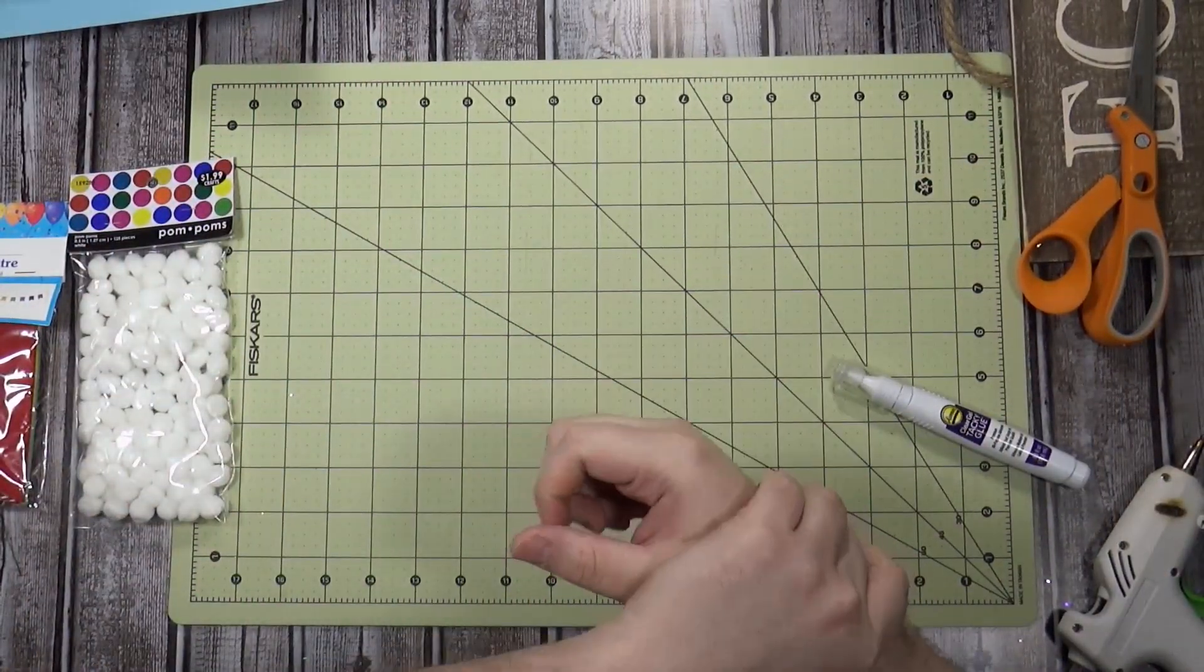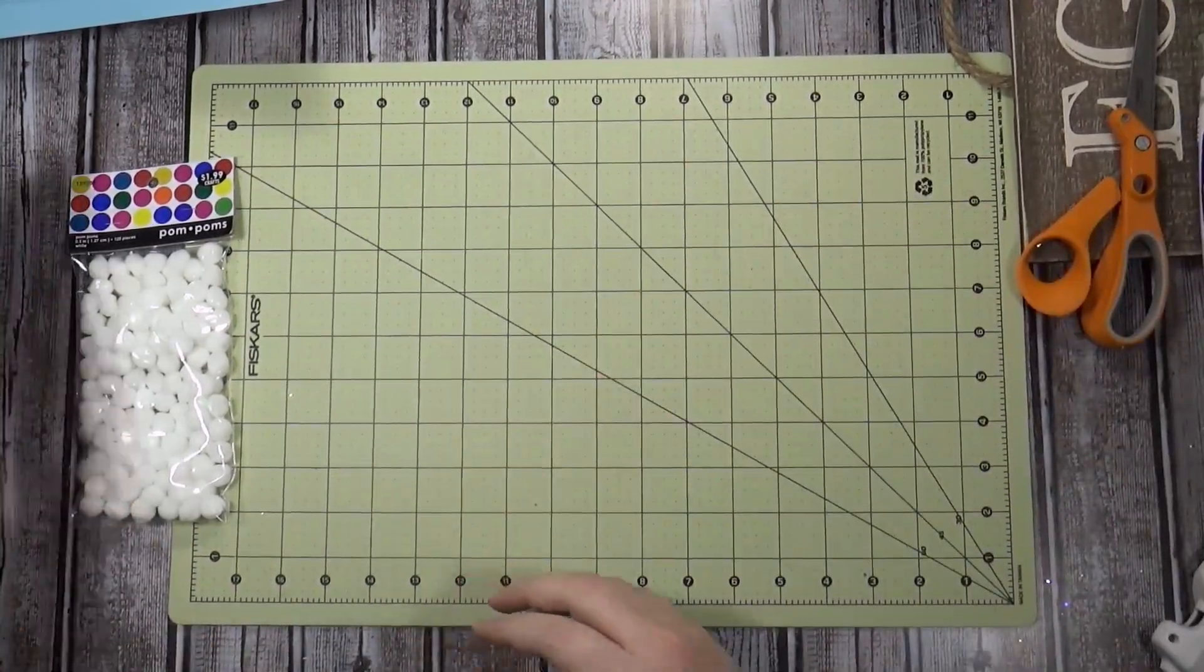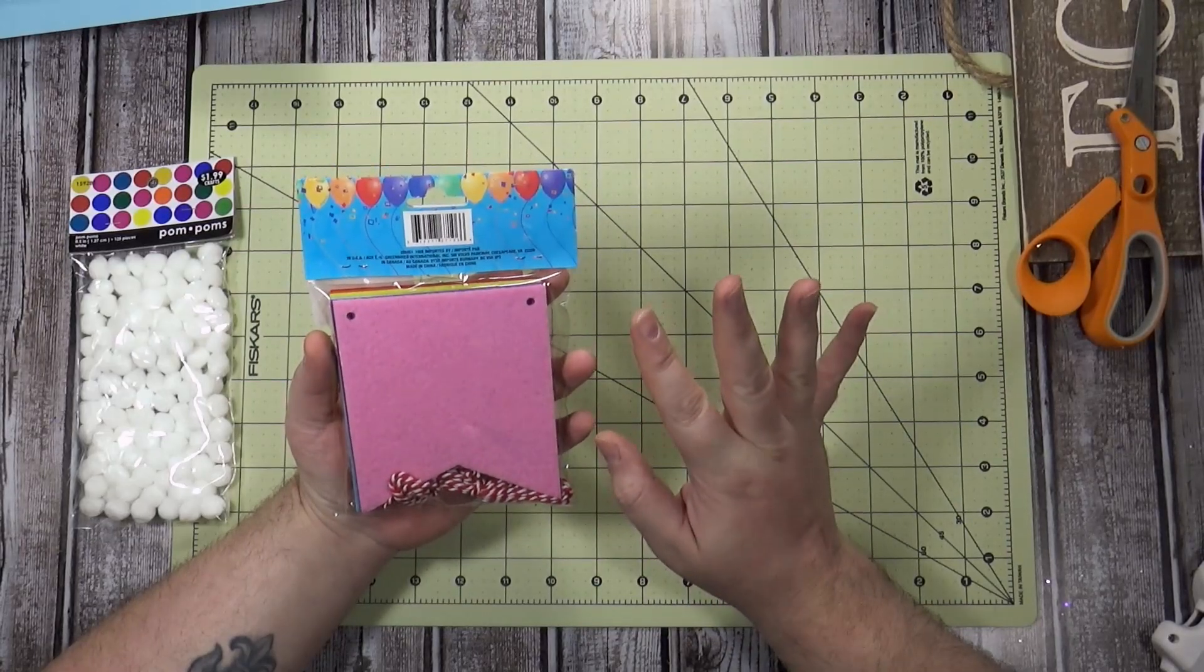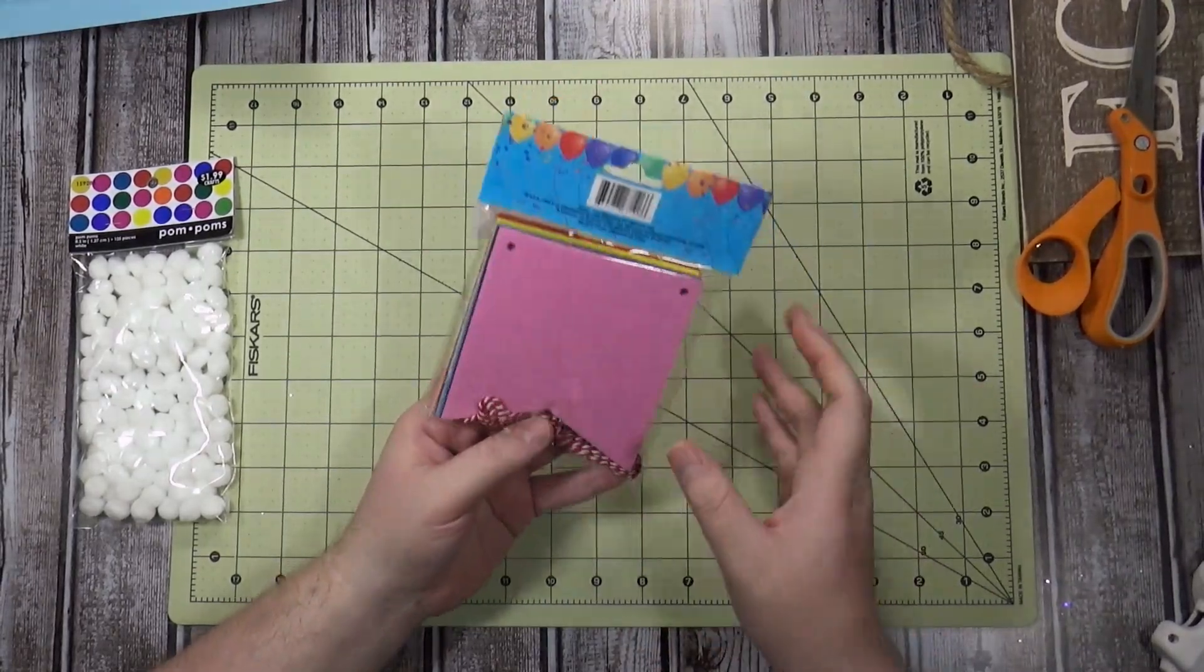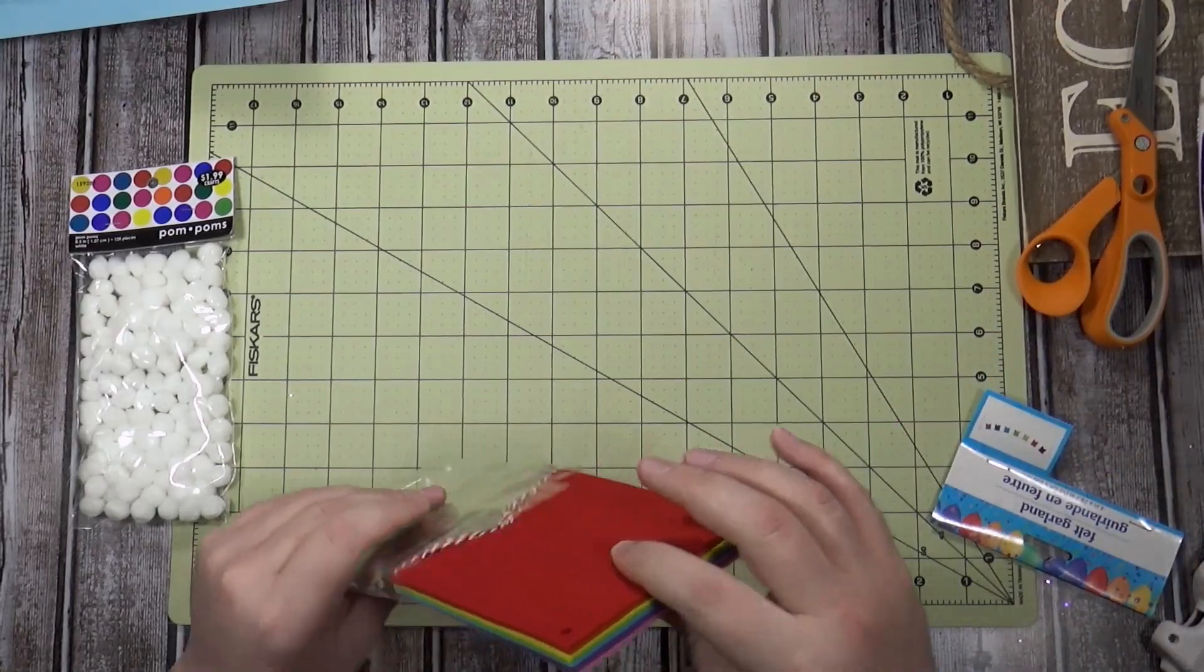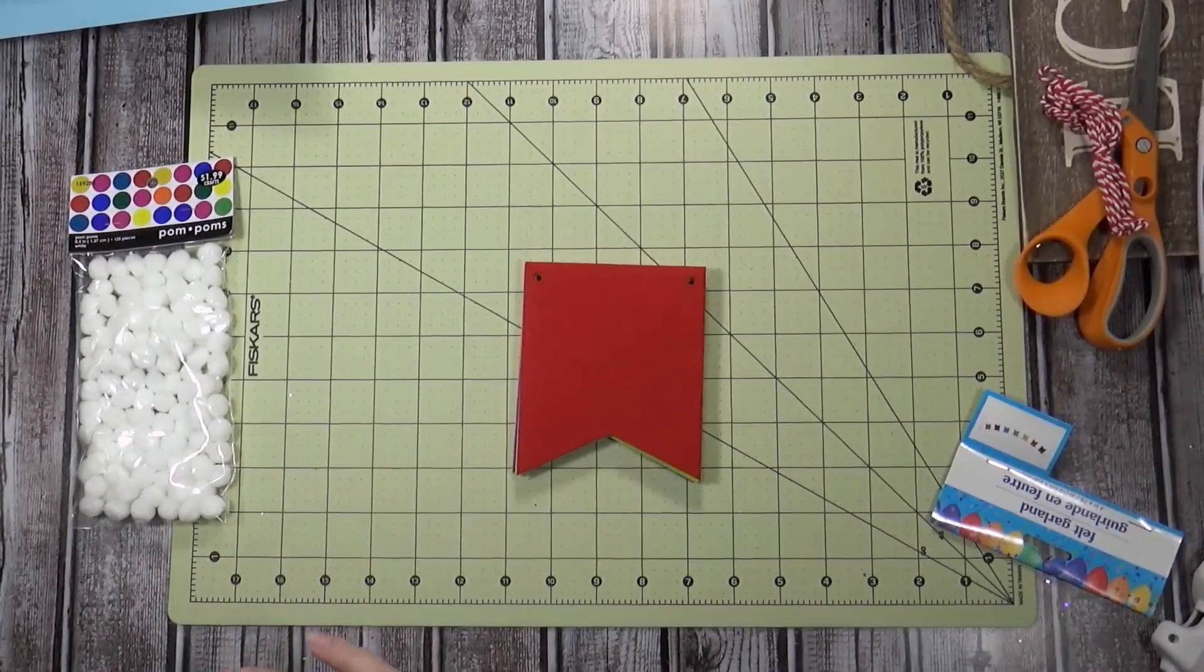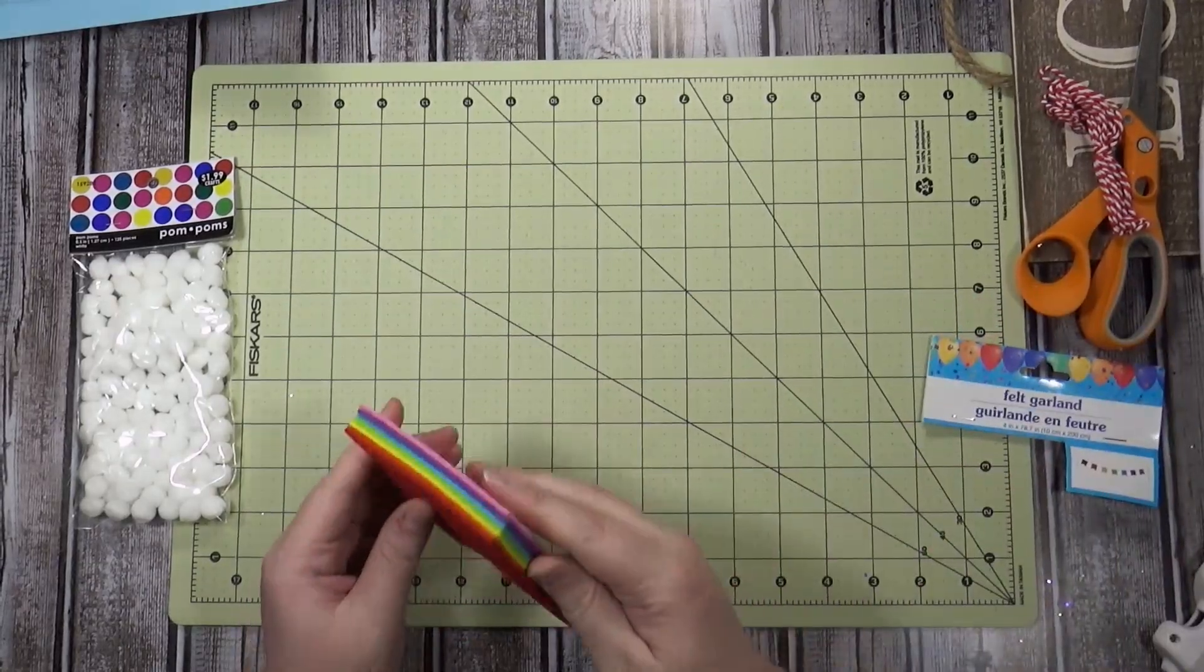Every time I try to do something I forget that I'm broken all over. I'm making a banner with what I call felt garland, which I guess it is. This is from the Dollar Tree. I got this a while ago. This is really stiff felt, which I like. It's seven pieces.